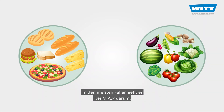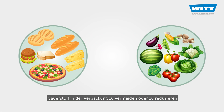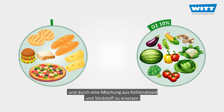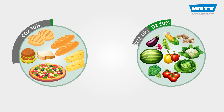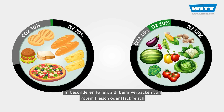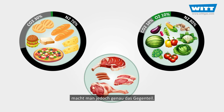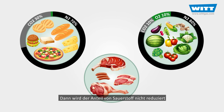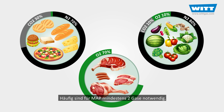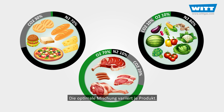In most cases, MAP is aimed at eliminating or reducing oxygen inside the packaging and replacing it with a mixture of carbon dioxide and nitrogen. Of course, in special cases such as packing red meat and fresh produce, the opposite is correct — we do not eliminate the oxygen but instead increase its concentration to prevent anaerobic growth. MAP therefore normally requires a mixture of at least two gases, and the optimum proportions vary from product to product.